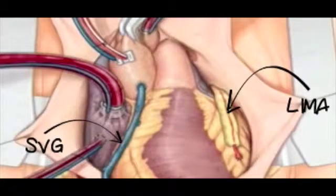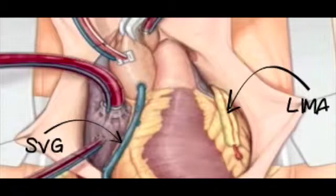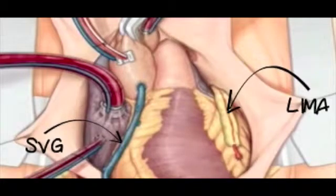Worldwide, more than 800,000 patients undergo CABG annually, with more than 350,000 patients operated each year in the United States. Based on small studies of selected groups of patients, it is generally believed that SVGs have a 40–50% 10-year patency and that the IMA has a 90–95% 10-year patency.